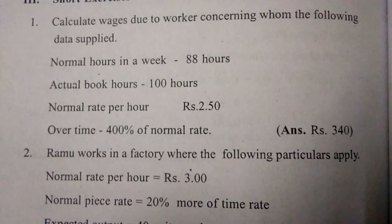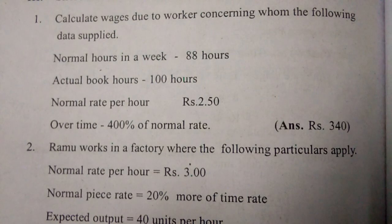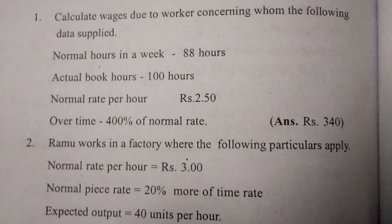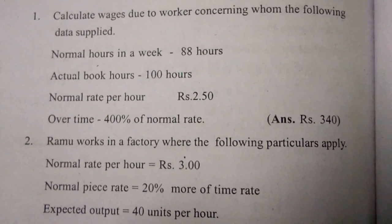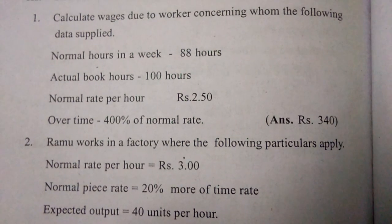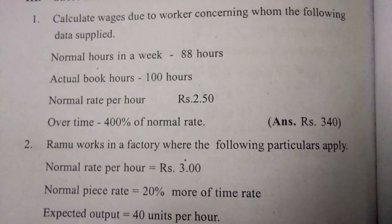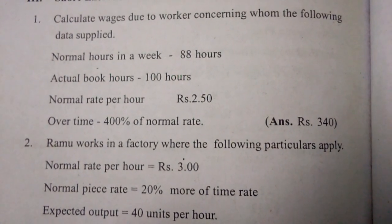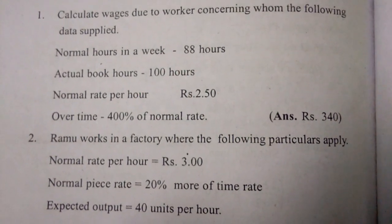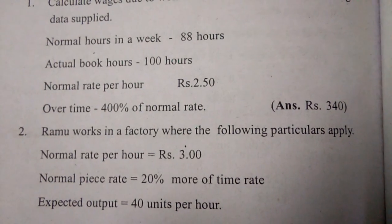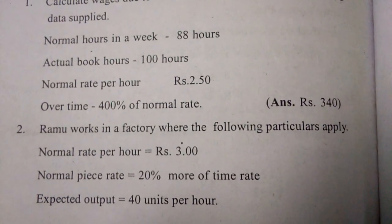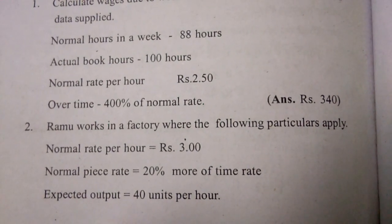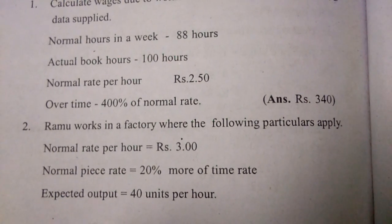Hi viewers, in this video we are presenting some important questions and topics for the JEO aspirants from a cost and management accountancy point of view. First one: calculate wages due to a worker concerning whom the following data is supplied. Normal hours in a week: 88 hours, actual worked hours: 100 hours, normal rate per hour: 2 rupees 50 paisa.